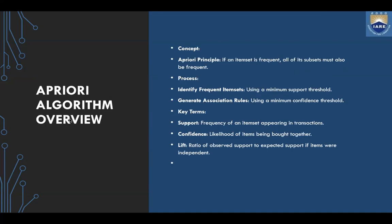One of the algorithms for this is the Apriori algorithm. Its key property is: if an item set is frequent, all of its subsets must also be frequent.